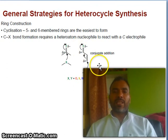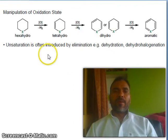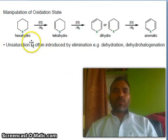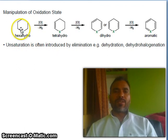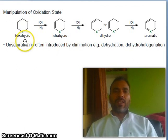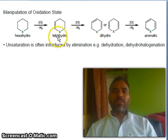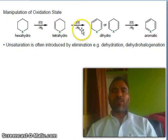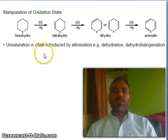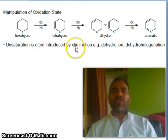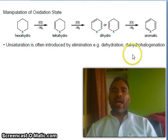Now oxidations. You see this is a cyclohexane — hexahydro. On oxidation it gives tetrahydro, losing two hydrogens. Tetrahydro on oxidation gives dihydro, and on further oxidation gives the aromatic compound. Unsaturation is often introduced by elimination — elimination means dehydration or dehydrohalogenation.